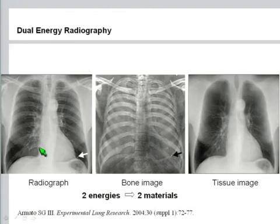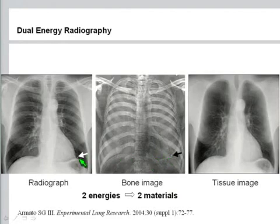By this, you can distinguish between bone and soft tissue at high density. You can clearly identify that this nodule, or whatever this is, is bone and not soft tissue with a high density.